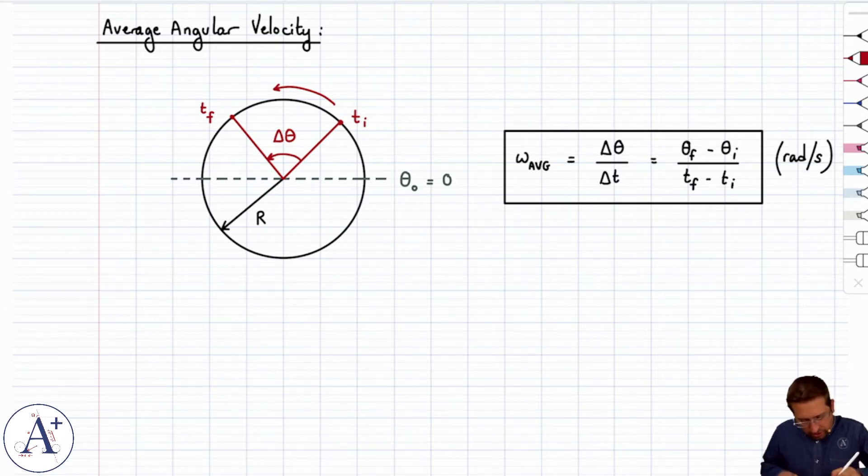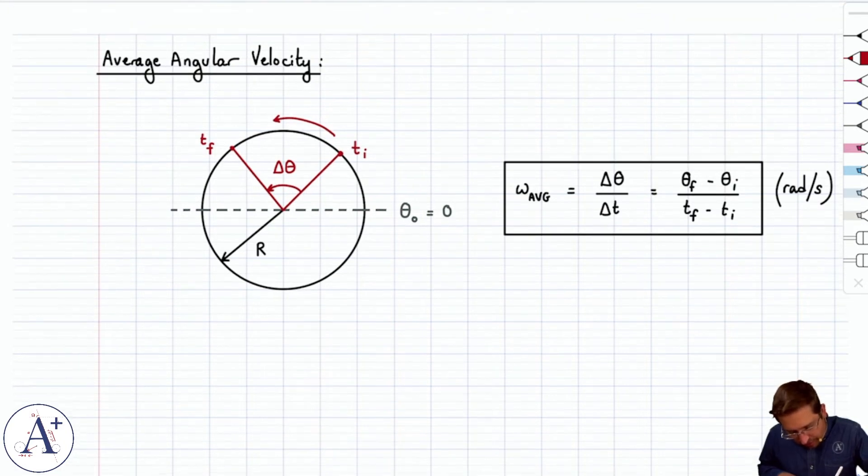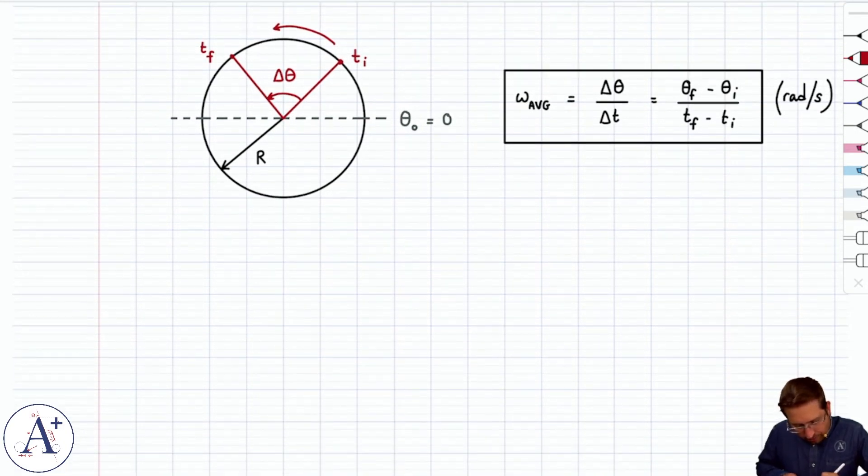But for now, maybe let's just do an example and see what we get when we compute. Let's say t initial is one second, t final is three seconds. And let's say, you could write it here, you could write it over there, whatever.